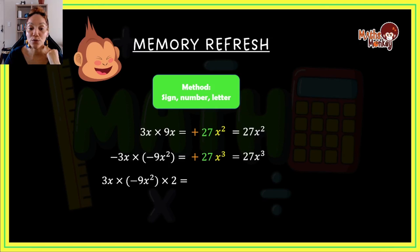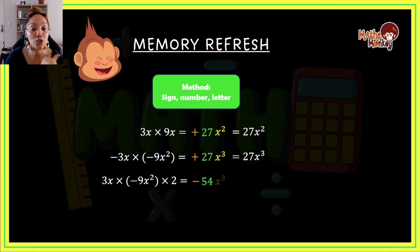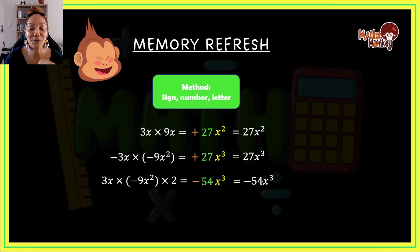Next: 3x times negative 9x squared times 2. Positive times negative is negative, then negative times positive is still negative. 3 times 9 times 2 is 54. For the letters: x times x squared gives x cubed. So my final answer is negative 54x to the power of 3.